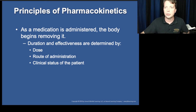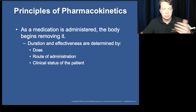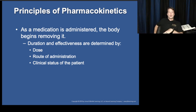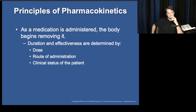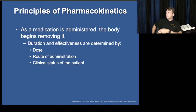Duration, effectiveness, route of administration, and clinical status of the patient all matter in pharmacokinetics. Clinical status means things like vital signs — blood pressure and heart rate. If their heart rate is higher, it may indicate their metabolism is higher, so the drug is biometabolized and eliminated faster. But going the other direction: a common negative cause of increased heart rate is shock. In shock, the patient doesn't have adequate perfusion — blood isn't moving through the system adequately. So if you gave a medication IV in the hand to a patient in shock, it may not get effectively transported into circulation.